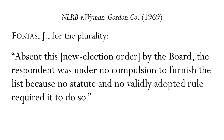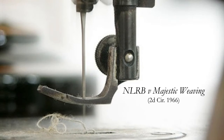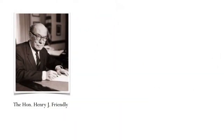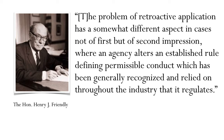The most articulate judicial discussion of the retroactivity problem had already been offered three years earlier by Judge Henry Friendly in the Second Circuit in his opinion in NLRB v. Majestic Weaving. In that case, the Textile Workers Union claimed that conditional negotiations entered into by Majestic and the Teamsters prematurely favored the Teamsters in a contest to decide which union would be the employees' representative. In addressing the general problem, he wrote: the problem of retroactive application has a somewhat different aspect in cases not of first, but of second impression, where an agency alters an established rule defining permissible conduct which has been generally recognized and relied on throughout the industry that it regulates. He is addressing the possible unfairness of upsetting the expectations of parties who have relied on prior direction from an agency that, in an adjudication, goes against its own precedents.